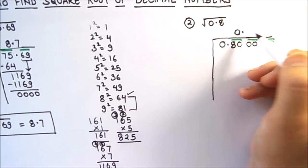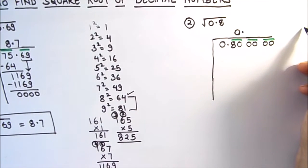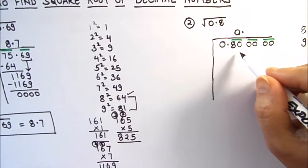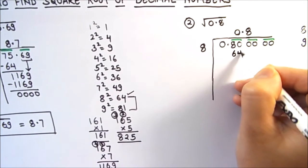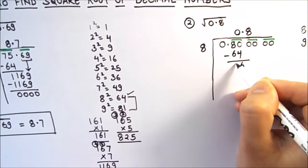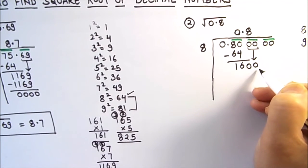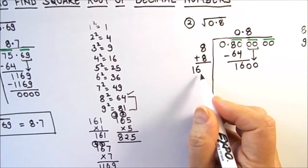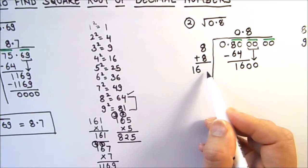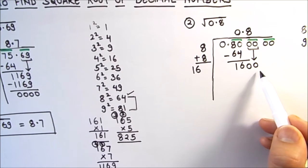Since there is a decimal point before the first group, we place a decimal point in our quotient first. We find a number whose square is equal to or just less than 80. We have 8²=64 and 9²=81. Since 81 is greater than 80, we take 8 as our first divisor. 8×8=64. Subtracting: 80−64=16. We drop down the next pair of zeros to get 1600.